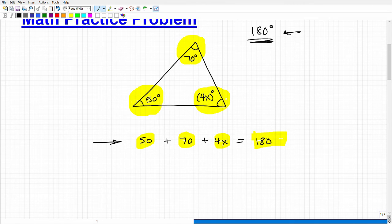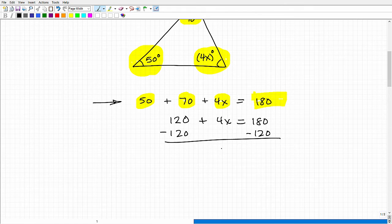So let's go ahead and get to this. We got 50 plus 70, and that, according to my calculations, will be 120, right? So that's 120 degrees there, plus 4x is equal to 180. All right, so what do we do now? Well, we want to go ahead and subtract 120 from both sides of the equation. And I get 4x is equal to 60.